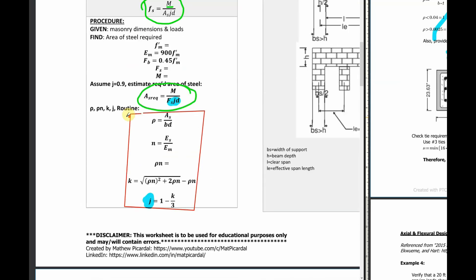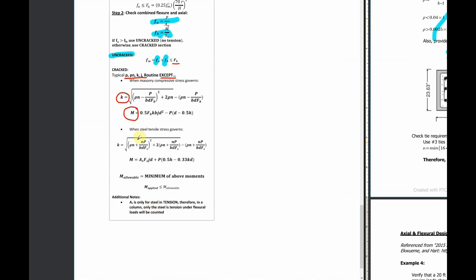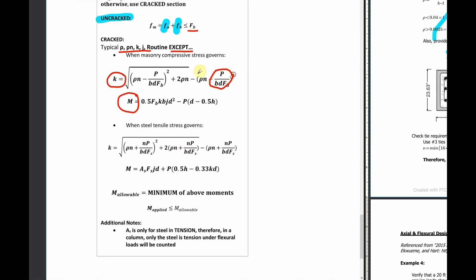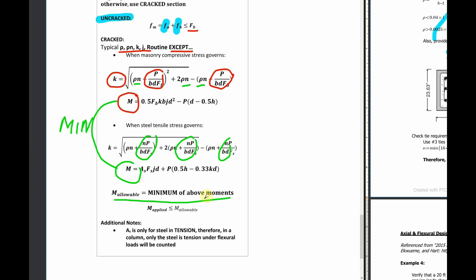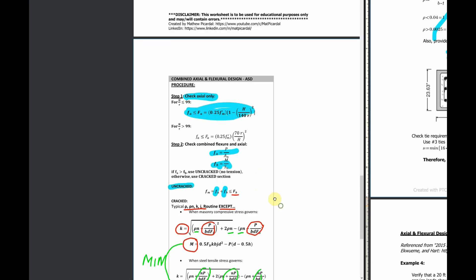For an uncracked section, you simply combine the axial and bending stresses and check that the total is less than your allowable bending capacity. For a cracked section, you go through the ρNKJ routine again — it looks more intimidating but it's the same process as for bending, except your K equation is different and your moment capacity equations are different. You can see that K is a longer equation but it can be simplified. Once you work through and find these values, you solve for the moment when compressive stress governs and when tensile steel stress governs, and the minimum of those is your maximum allowable moment. Check that against the applied moment.